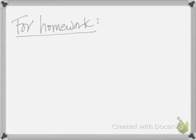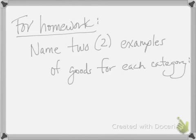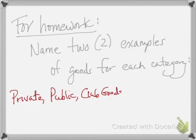For homework, I'd like you to read the chapter that deals with public and private goods and common resources. Then identify at least two examples of goods for each category: private, public, club goods, and common resources. Put it in the drop box and bring your list to class the next time we meet.